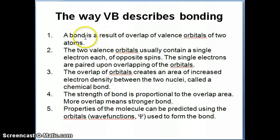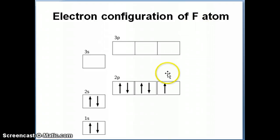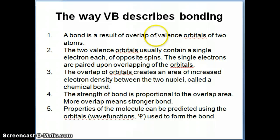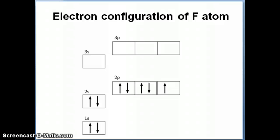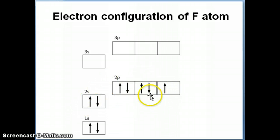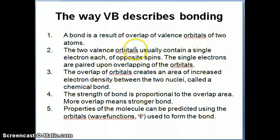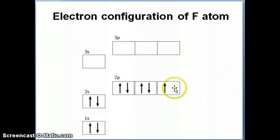Remember, the idea with the valence bond model is that a bond results from the overlap of valence orbitals of two atoms. In the case of F2, there will be two F atoms that overlap. The question is which of the five orbitals could be used for bonding. First, you need to make sure it's the valence orbital, because valence electrons have the weakest interaction with the nucleus, so they're most likely to interact with electrons from other atoms. That limits us to just the valence shell electrons for fluorine.